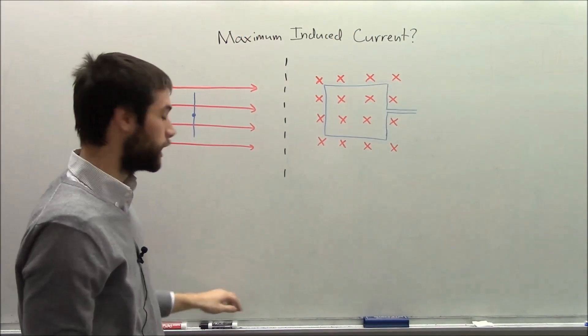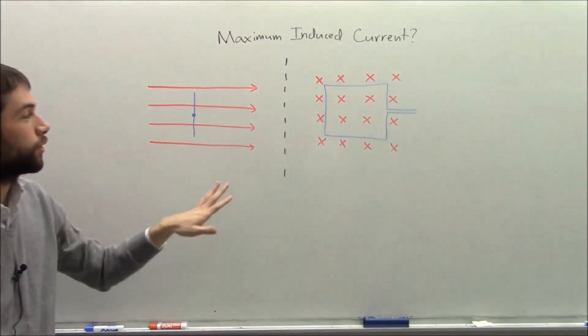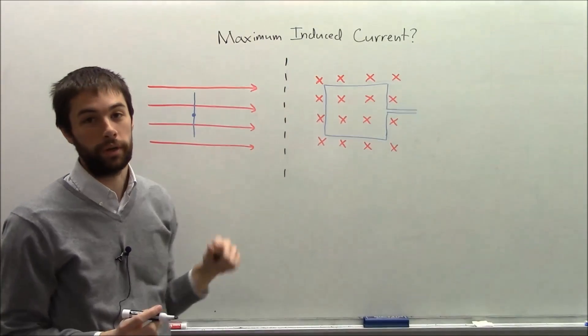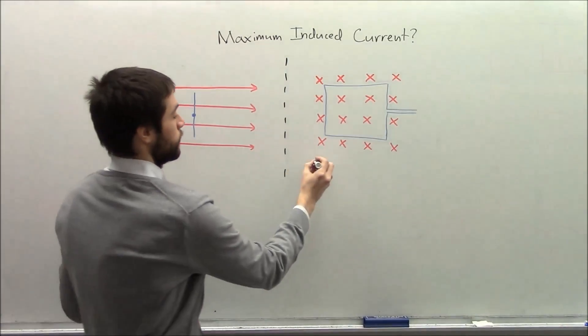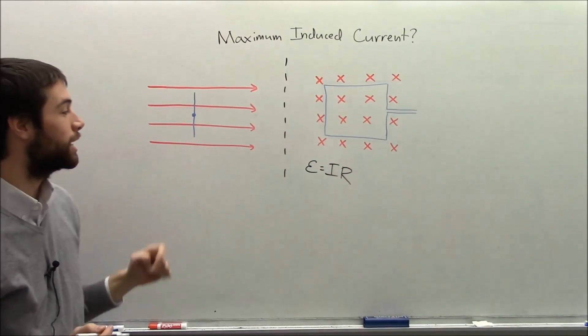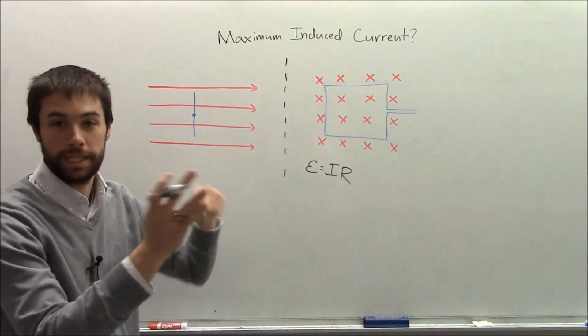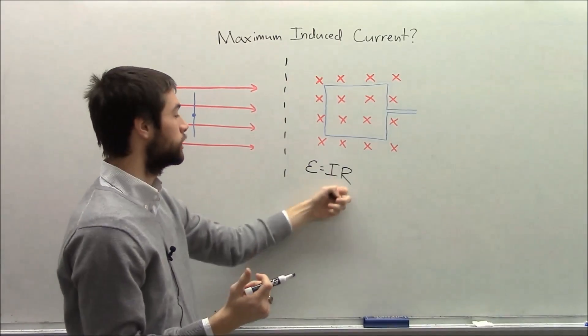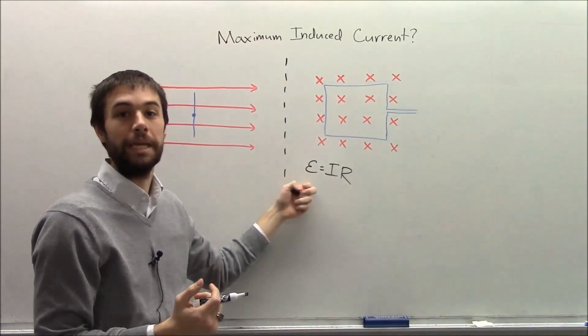Okay, so there's a couple things that we want to look at in order to start this. We're trying to find the maximum induced current. That should tell us immediately that what we need to find, if the resistance in the loop is some number, is the maximum EMF that we can induce.